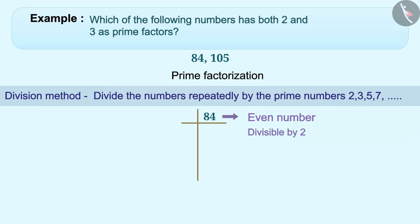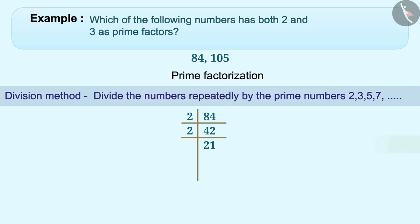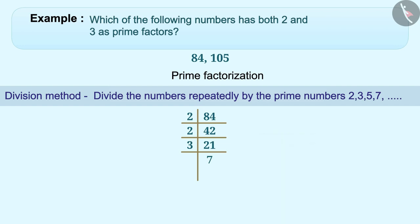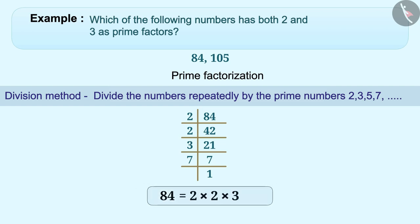Since 84 is an even number, it is divided by 2. Dividing 84 by 2 gives 42; dividing 42 by 2 gives 21. Since 21 is not divisible by 2, we check the next prime number, 3. The sum of digits of 21 is 3, which is divisible by 3, so 21 is also divisible by 3. Dividing 21 by 3 gives 7. Since 7 is a prime number, we divide by 7 to get 1, showing we have found all prime factors. Therefore, 84 = 2 × 2 × 3 × 7.